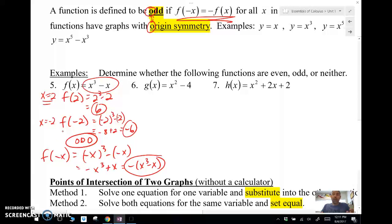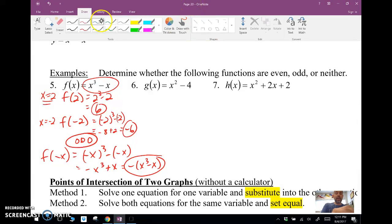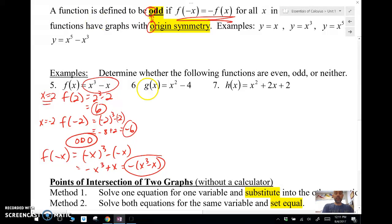But we could just do it informally for these. Let's do this one informally as well. Let's do x equals—let's do g of one. We'll have one squared minus four, which gives me negative three. We'll do g of negative one. What we're doing is we're plugging in one and then we're plugging in the opposite of one and seeing if we're going to get the opposite or the same. If we get the same number, then it's going to be even. If we get the opposite number, then it's going to be odd.